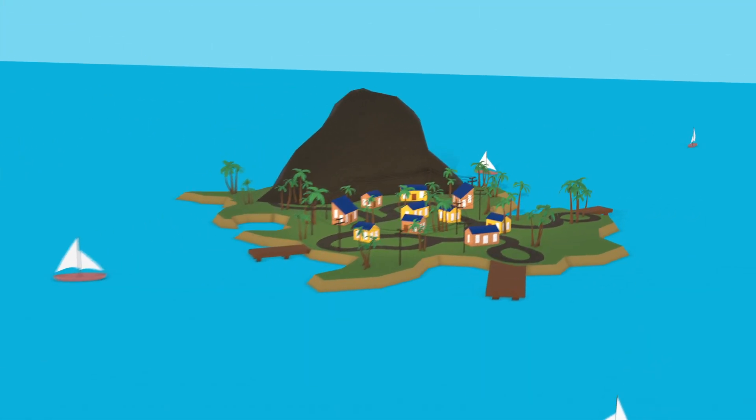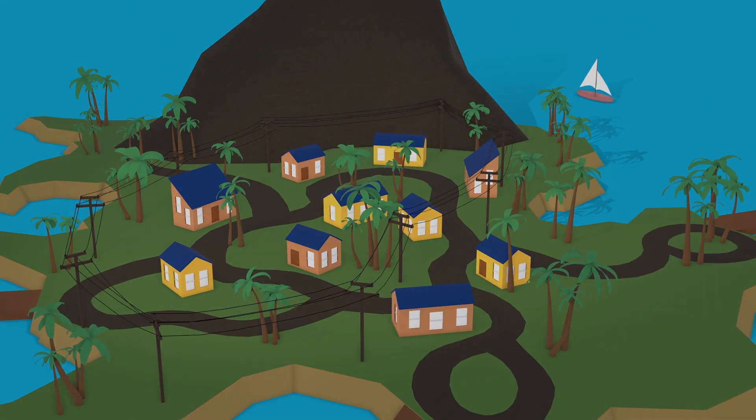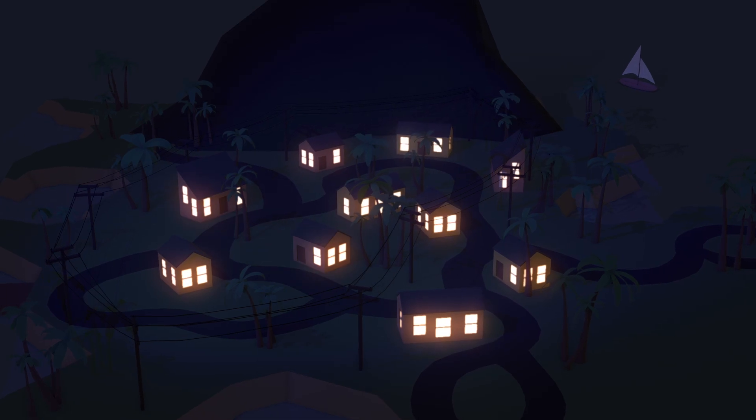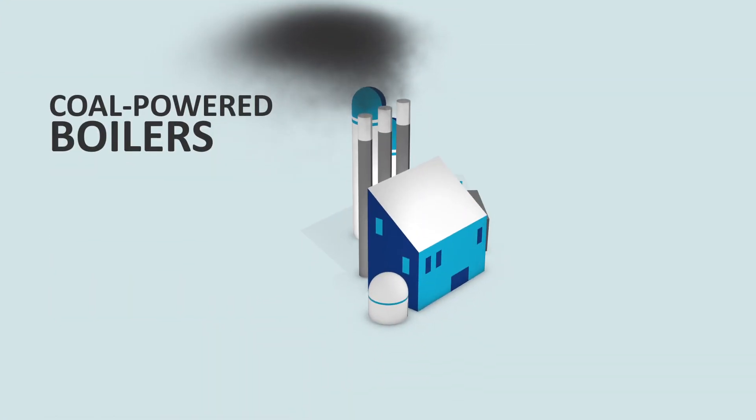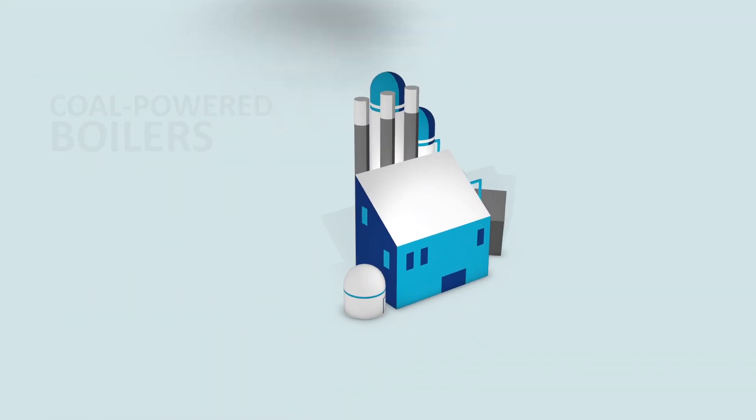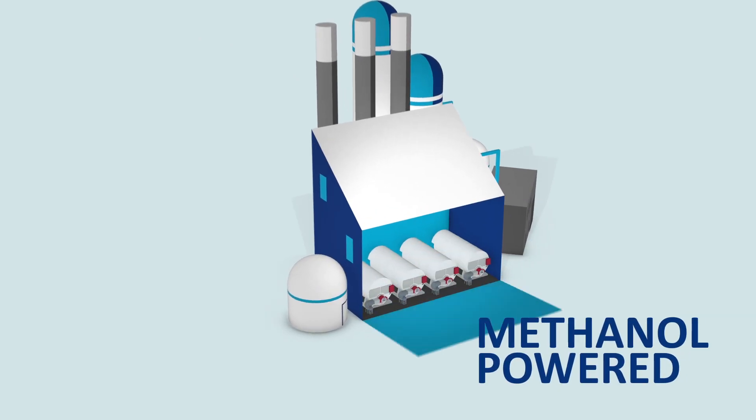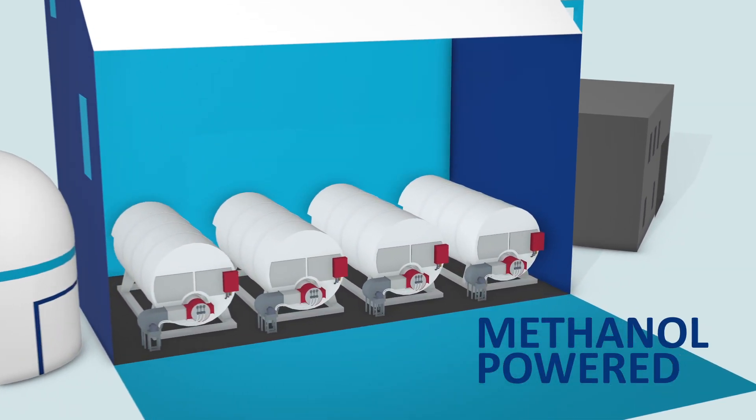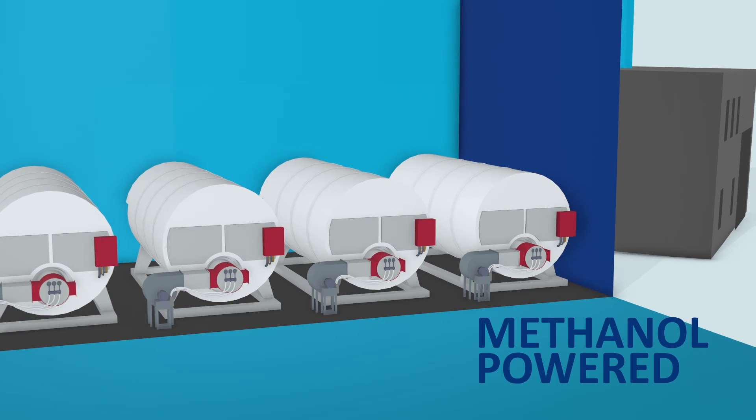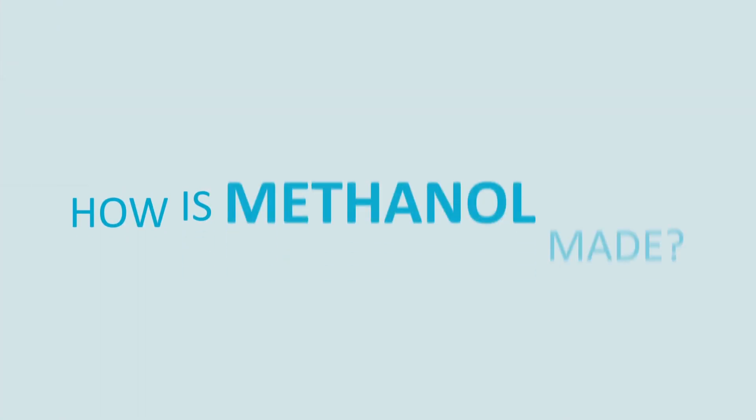Methanol is also emerging as a clean burning fuel for power generation in remote communities, helping keep homes bright and businesses working. Today methanol is used as a clean burning fuel for industrial boilers in China, replacing coal-fired boilers and contributing to local air quality benefits.